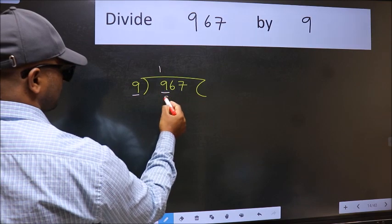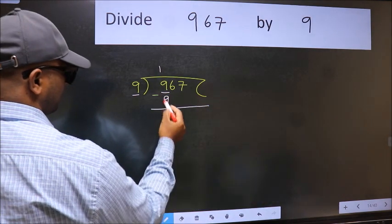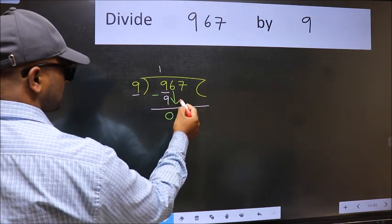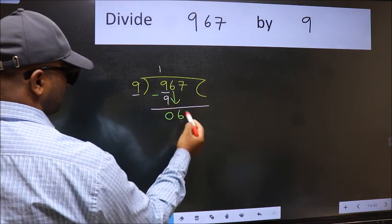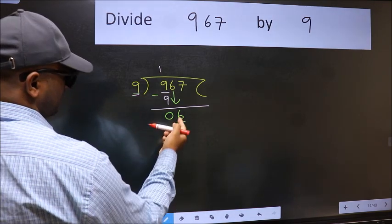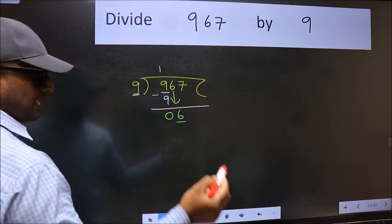Nine ones nine. Now we should subtract, we get zero. After this, bring down the next number, so six down. Now here we have six and here nine. Six is smaller than nine, so we should bring down the second number.